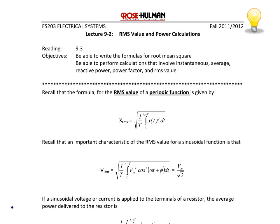Recall that the formula for the RMS value of a periodic function is given by x_RMS equals the square root of 1 over T, the integral from t0 to t0 plus the period, x of t squared dt. Also recall that an important characteristic of the RMS value for a sinusoidal function is that it's equal to the magnitude divided by the square root of 2.